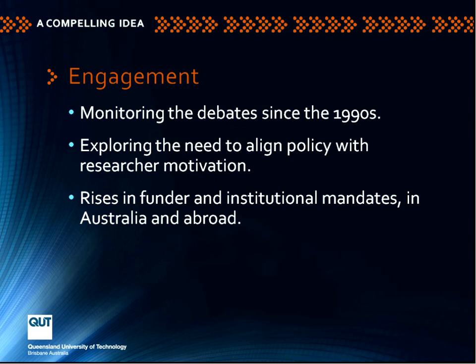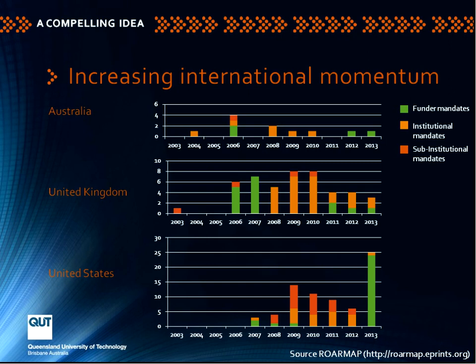We engaged by monitoring the global debates on the net about this topic. We explored within the university the need to align our policy with researcher motivation. And we watched the rise in policy and mandates from both funders and institutions in Australia and abroad. A source called ROARMAP shows the rise from 2003 and 2004 of different kinds of policy mandates that have arisen since, particularly in the English-speaking world.